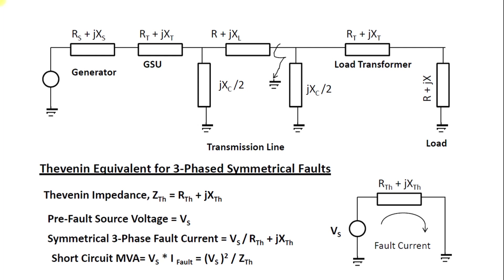How do we implement a short circuit calculation for a three-phase balanced short system? Consider this example: a generator connected to a step-up transformer, then to a transmission line, then a load transformer, and then the load.